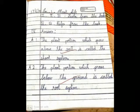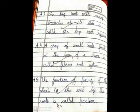Question two: What is the root system? The plant portion which grows below the ground is called the root system.